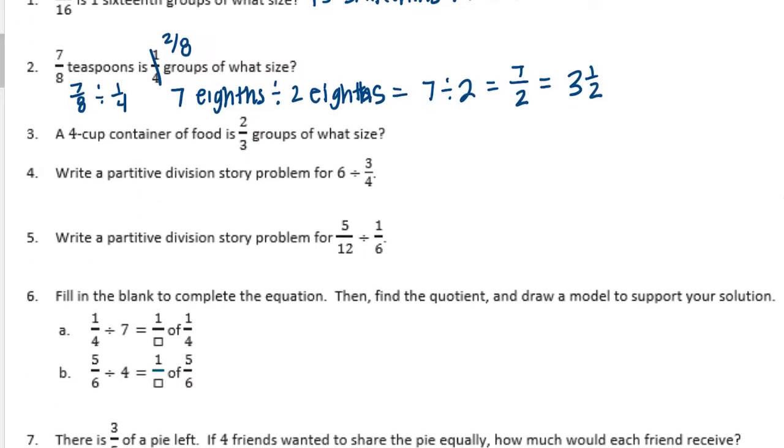Number 3: A 4 cup container of food is 2 thirds groups of what size? So I'm going to draw a picture for this one. So the 4 cup container of food is 2 thirds. So we have 2 thirds is equal to 4 cups.